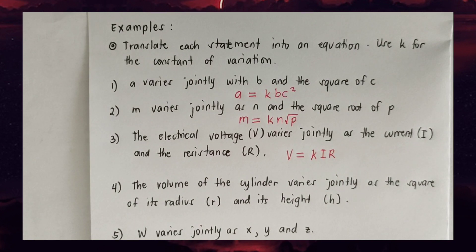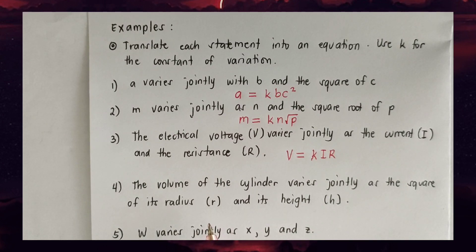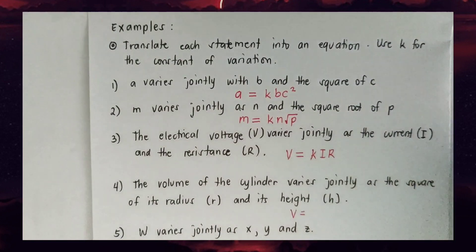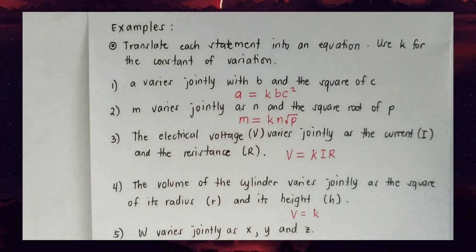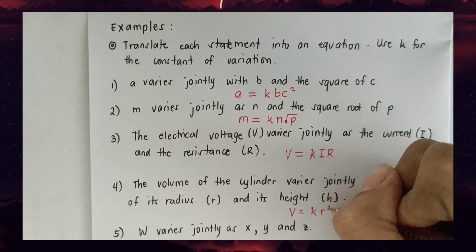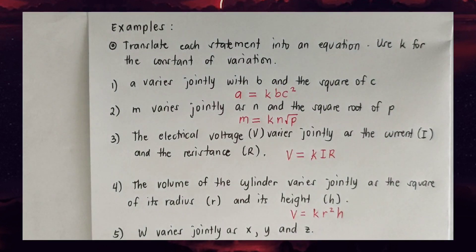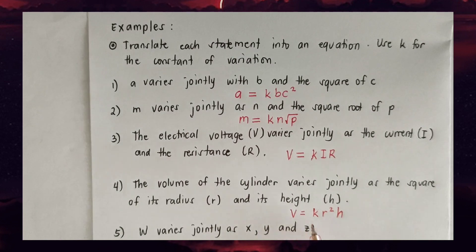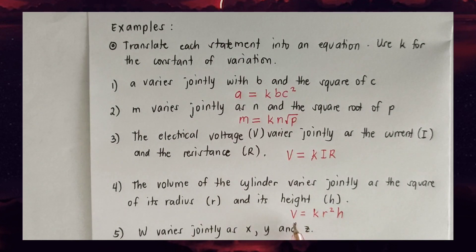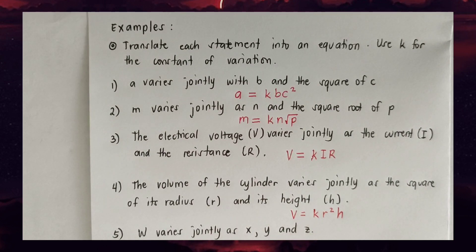Number four: 'The volume of a cylinder varies jointly as the square of its radius and its height.' We write V = kr²h — volume varies jointly as the square of the radius and its height.